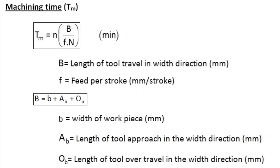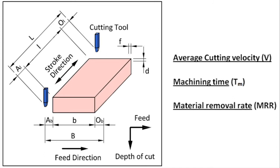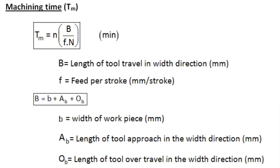The next parameter is machining time. Machining time TM equals N·B divided by F·N, with the unit being minutes. Here capital B is the length of tool travel in the width direction (feed direction) in millimeters, and F is the feed per stroke in millimeters per stroke. Capital B equals b plus AB plus OB, where small b is the width of the workpiece in millimeters, AB is the length of tool approach in the width direction, and OB is the length of tool over travel in the width direction in millimeters.